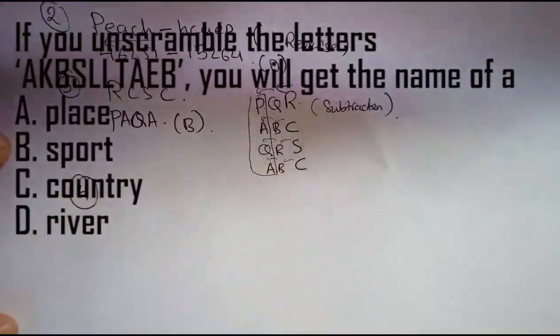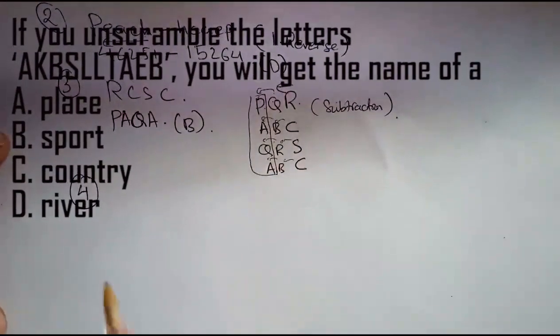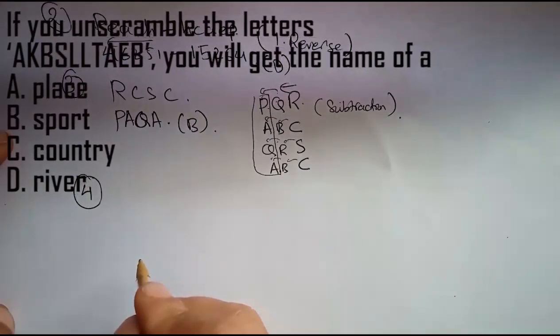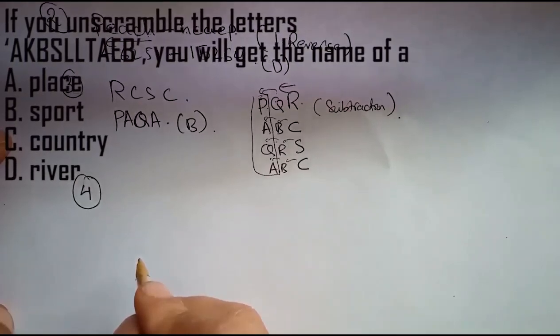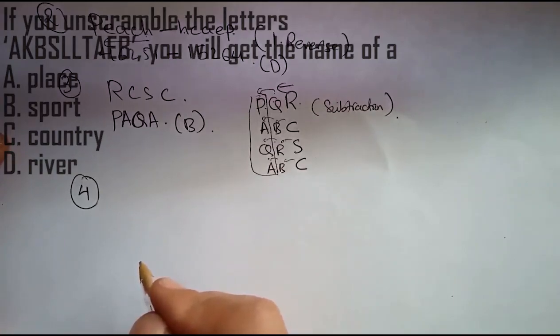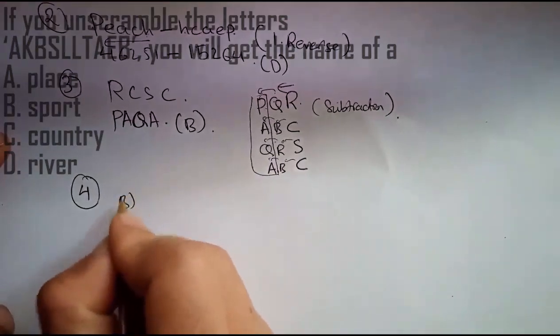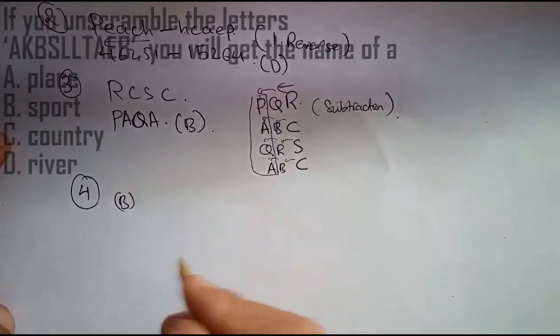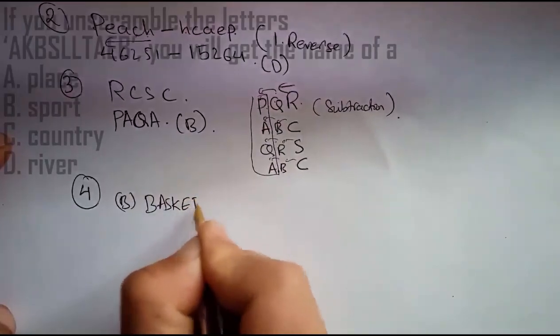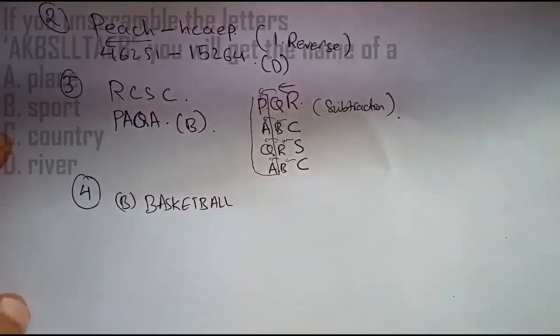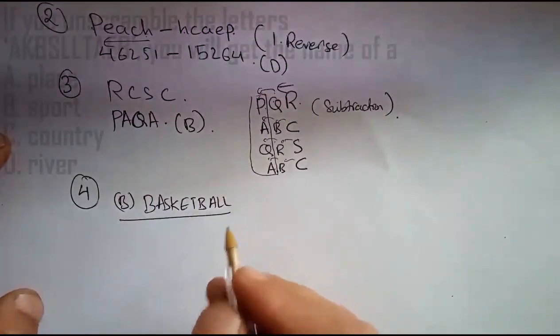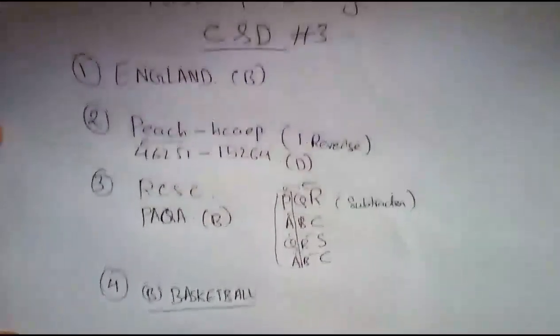Question number four: If you unscramble the letters A-K-B-S-L-L-T-A-E-B, you will get the name of a place, sport, country, or river. The correct option is B, sport. If you rearrange, you get BASKETBALL.